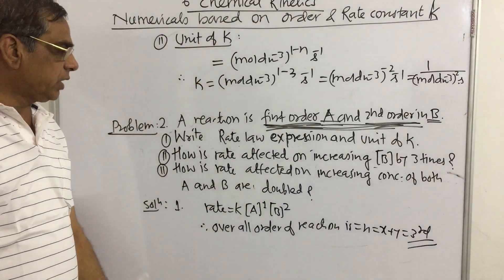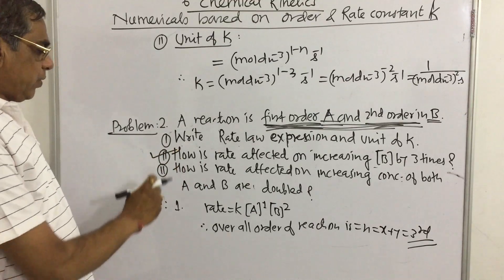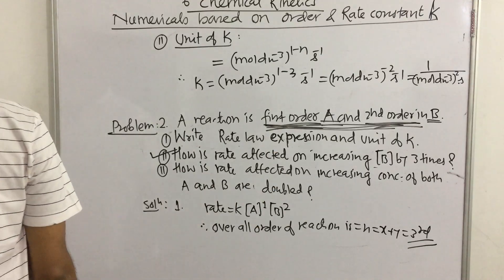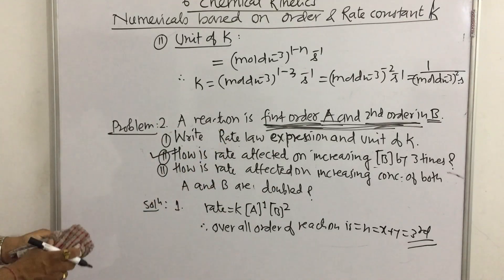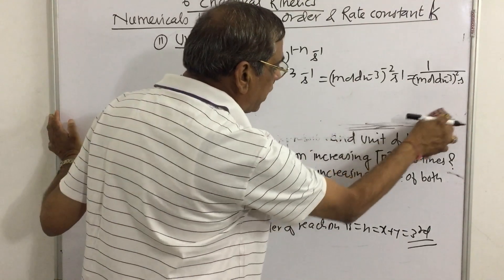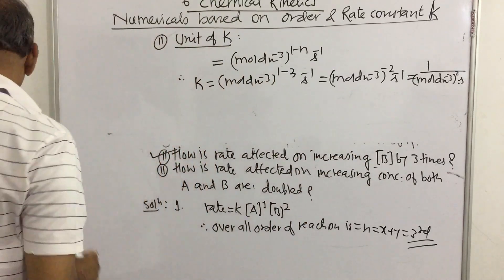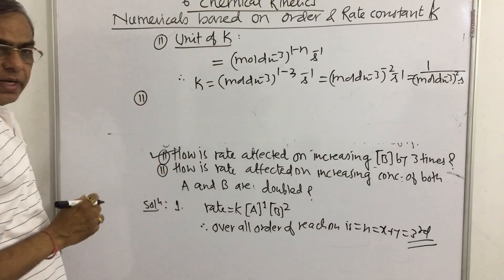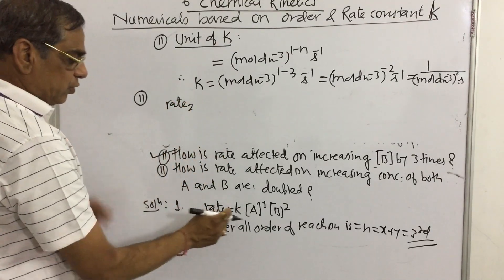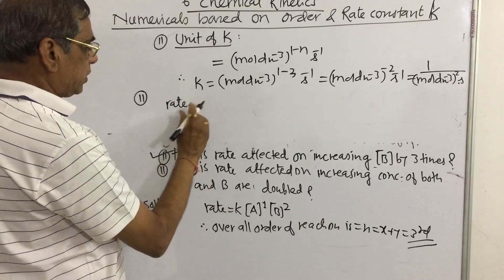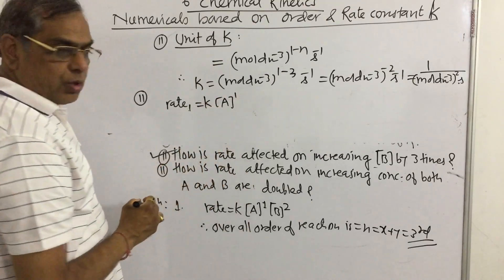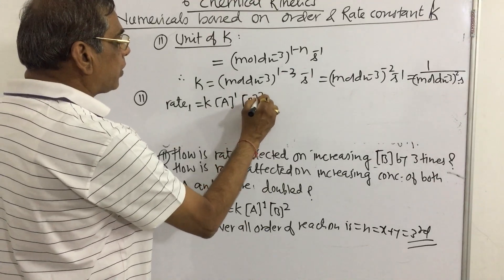Using this, the unit of k can also be written as mol⁻² dm⁶ per second. Now the second problem: how is the rate affected on increasing the concentration of B by 3 times? The rate law expression is: Rate₁ equals k into concentration of A raised to the power 1, and B raised to the power 2.